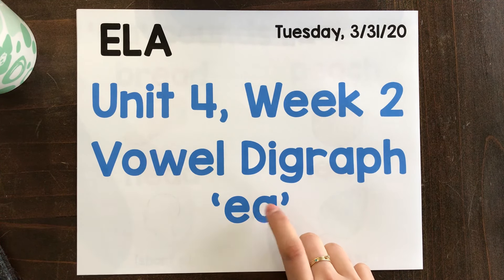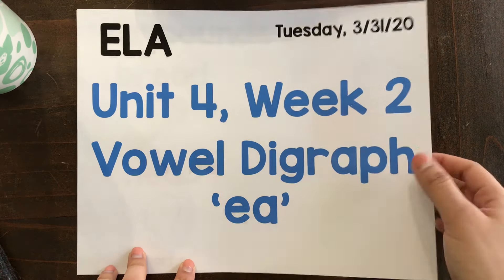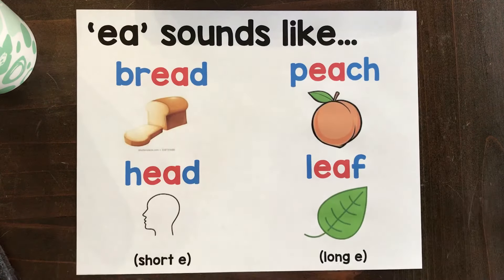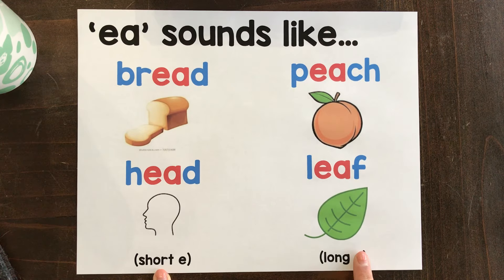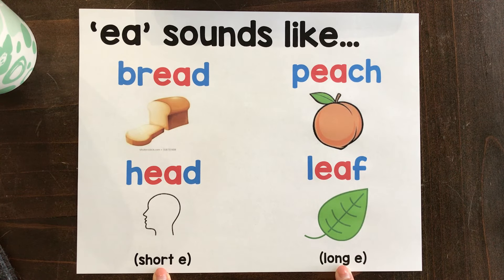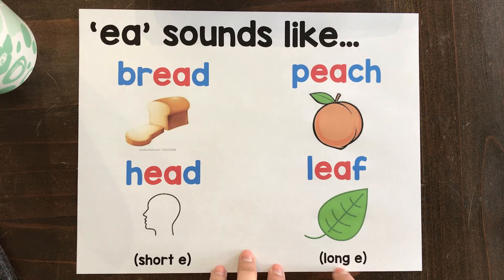EA is our digraph this week, and there are two sounds it can make: short E or long E. It's going to be your job to remember when it says long E and when it says short E.